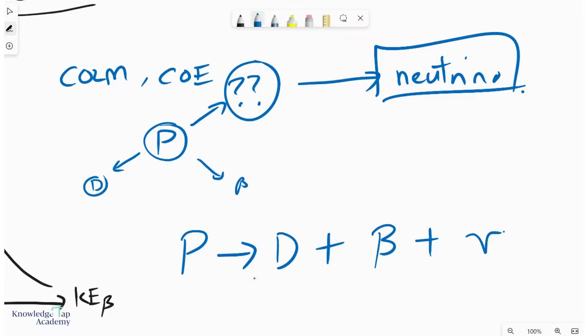Well actually, if this beta particle was an electron, then this should be an antineutrino. But for the purposes of this exam, it is not so important that we call it an antineutrino. A neutrino should suffice.